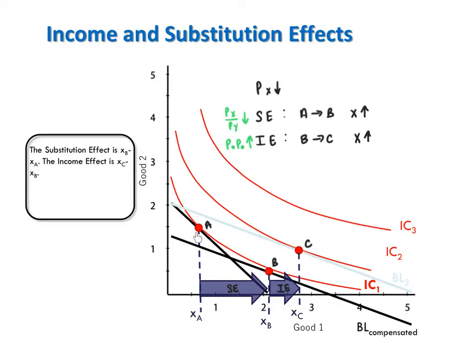Bundle A is a point of tangency to the original budget line with the original relative price of x. Bundle B is a point of tangency to the compensated budget line with the new relative price of x. So from A to B, the relative price of x in terms of y falls, but utility is held constant. We see here the substitution effect pulling consumption of good x up.